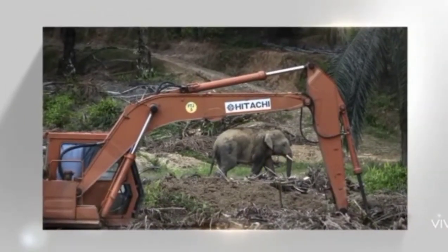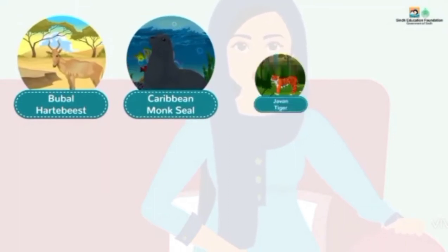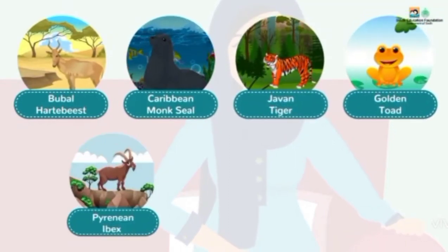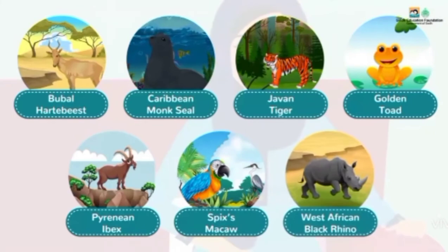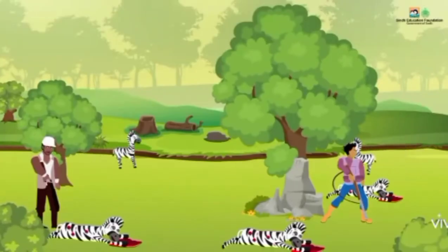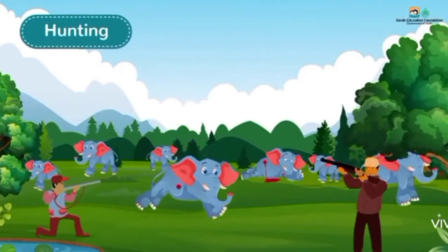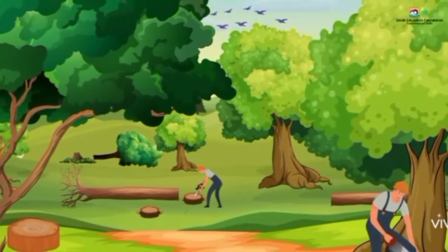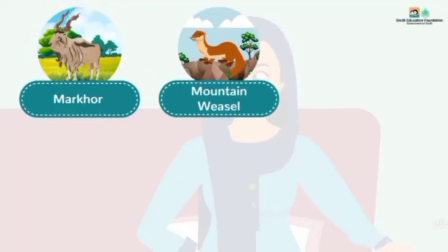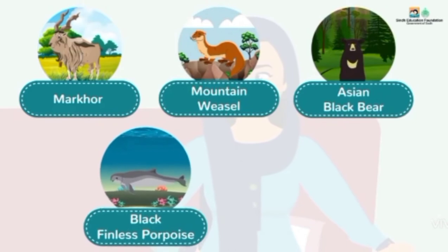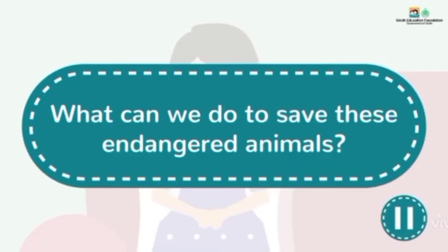Besides tigers, elephants, rhinos, and whales are also made up of different subspecies and populations being driven closer to extinction due to human activities. Heartebees, Caribbean monk seal, Javan tiger, golden toad, Pyrenean ibex, Spix's macaw, and western African black rhinos are examples of extinct animals. The reasons include heavy hunting and deforestation, which is another major cause of habitat loss. In Pakistan, markhor, mountain weasels, Asian black bear, black finless porpoise, and green sea turtles are endangered.